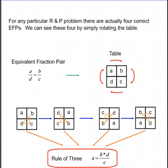For any ratio and proportion problem, there are actually four correct equivalent fraction pairs. We can see these four by simply rotating the table.